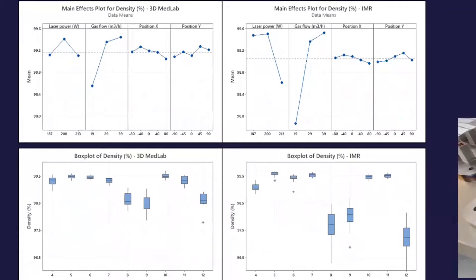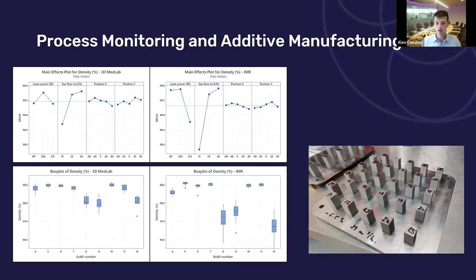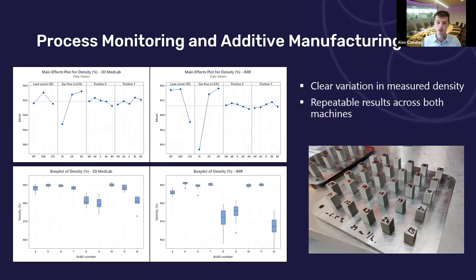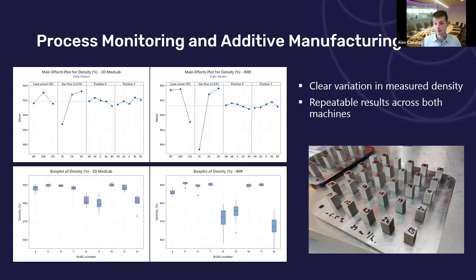Here are the main effects plots and some box plots giving a snapshot of both the printers at IMR and 3D MedLab. In this experiment, we altered our laser power by plus or minus just 6.5%, which is not an unrealistic deviation to see between annual calibrations. We also altered the gas flow rates of both machines between 19, 29, and 39 meters cubed per hour to simulate clogging filters or unexpected drops in line pressure. We found that a combination of these factors could easily cause an increase in porosity of our parts by almost 2%. We also observed slight differences between both machines captured in this data, but typically we observed larger differences between good and bad prints on either machine as opposed to any given print across both machines.